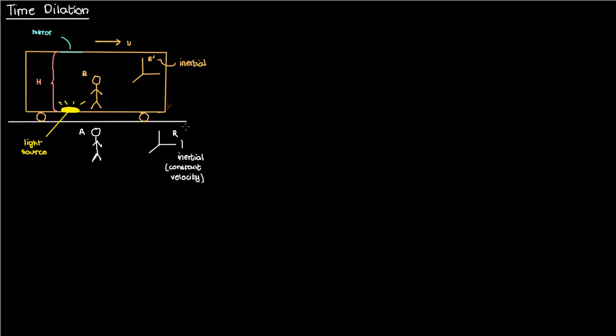When observer B exactly lines up with observer A, we'll set the clocks in both reference frames to 0, so that the time in R is t_i = 0 and the time in R' is t_i' = 0. The subscript i stands for initial.